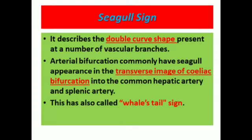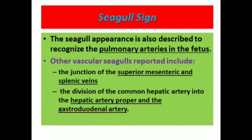Arterial bifurcations commonly have a seagull appearance. In the transverse image, the celiac artery bifurcates into the common hepatic artery and splenic artery — this is also called the veiled tail sign. The seagull appearance is also described to recognize the pulmonary arteries in the fetus.